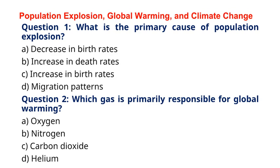Question 2: Which gas is primarily responsible for global warming? A. Oxygen. B. Nitrogen. C. Carbon dioxide. D. Helium. The correct answer to question 2 is option C: Carbon dioxide. Explanation: Carbon dioxide is a greenhouse gas that traps heat in the Earth's atmosphere, contributing to global warming.